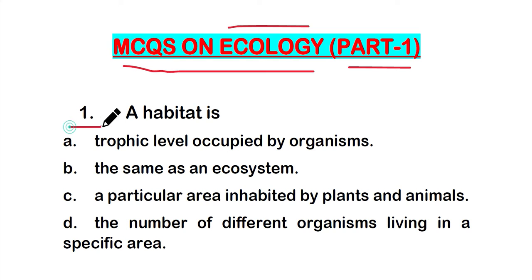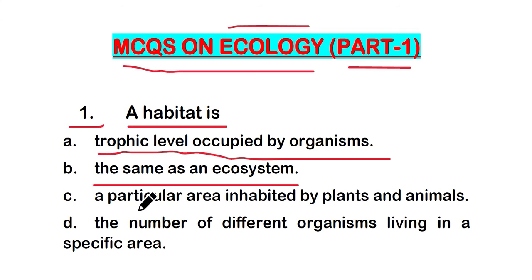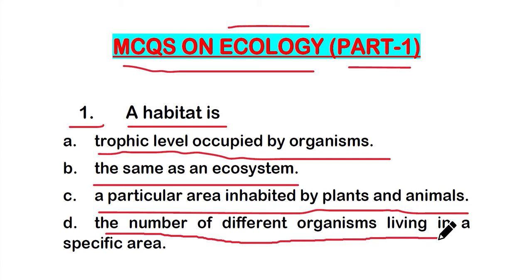Question number one: Habitat is — option A: trophic level occupied by organisms; option B: the same as an ecosystem; option C: a particular area inhabited by plants and animals; or option D: the number of different organisms living in a specific area. Which one is correct?